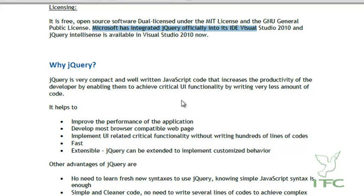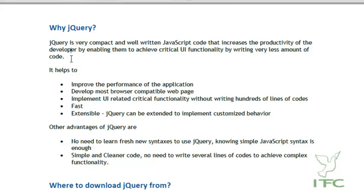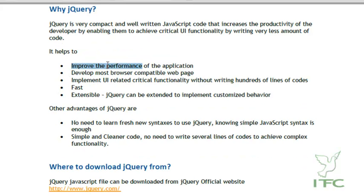You may ask: if we can work with JavaScript, and jQuery is just a library of well-written JavaScript code, why use jQuery? jQuery is a very compact and well-written code that increases developer productivity by enabling critical UI functionality with very few lines of code. Work that requires hundreds of lines in raw JavaScript can be done in just two to three lines in jQuery.